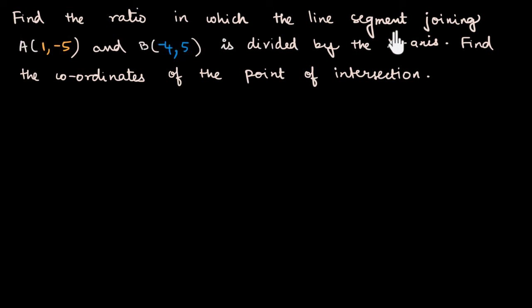Find the ratio in which the line segment joining 1 comma minus 5 and minus 4 comma 5 is divided by the x-axis.